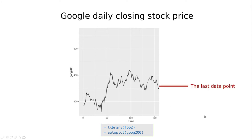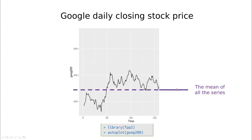A very simple model is to take the last data point as the prediction for the future — you assume there will be variability around this point, but it's the simplest thing you can do. Another approach is to assume that the series fluctuates around the mean, so you could guess that in the future it's going to be around the mean value of the series.